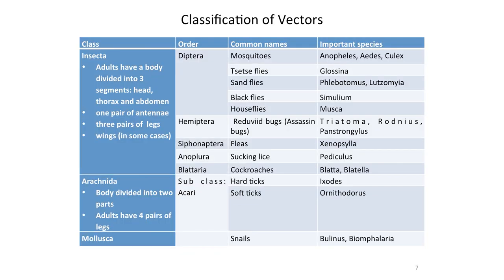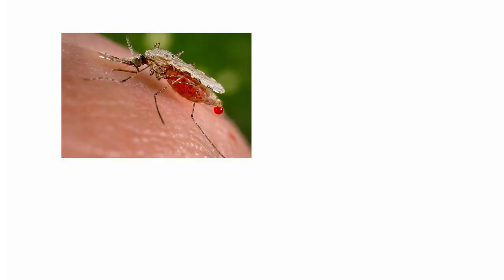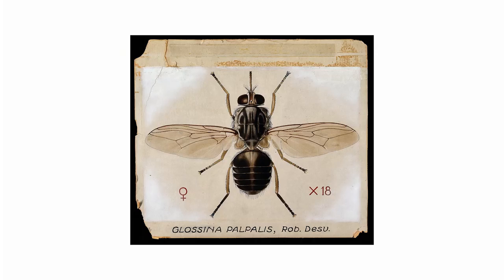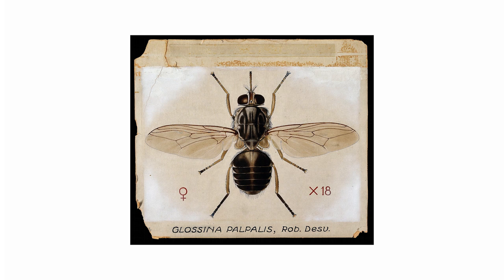The species include the Anopheles mosquitoes and Aedes, which transmit malaria and yellow fever. You have Glossina, which transmits trypanosomes. We have cockroaches, which are mainly mechanical vectors and can transmit diarrheal diseases, and so on.